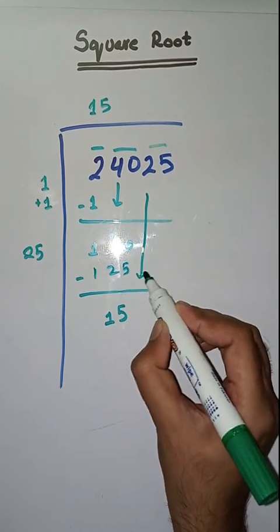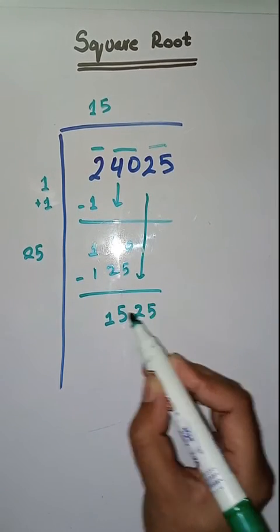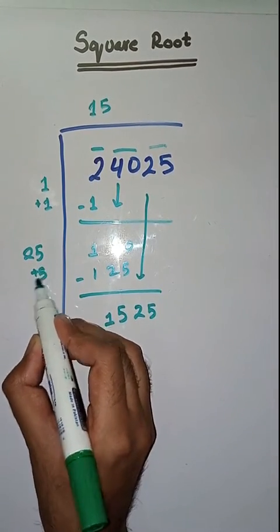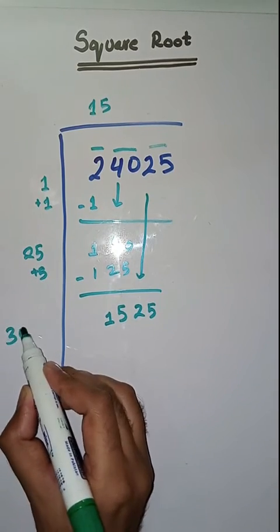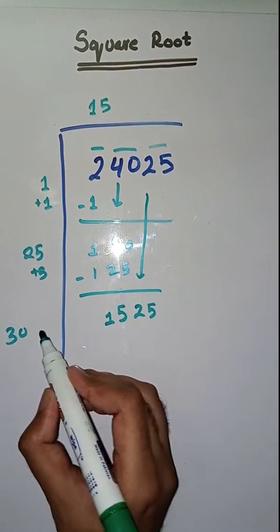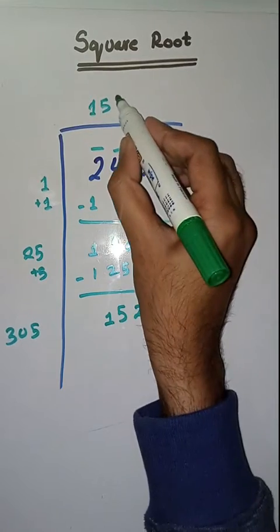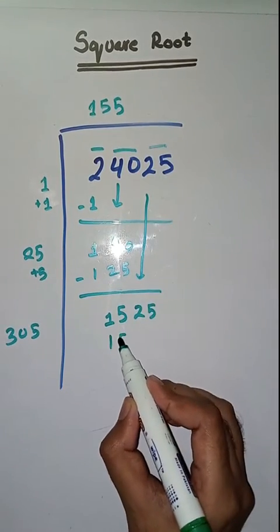Next, we will take 25. We take 25 plus 5, which equals 30. So we will take the number 5. 305 times 5 is 1525.